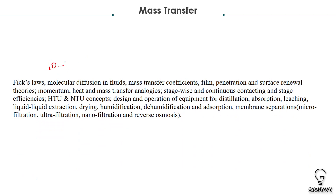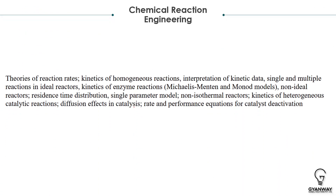Mass Transfer is asked for 8 to 12 marks and is important both for interviews and the GATE examination. Topics include Fick's Law diffusion, mass transfer coefficients, film, penetration, and surface renewal theories, momentum-heat-mass transfer analogies, HTU, NTU, and unit operations such as distillation, absorption, leaching, drying, extraction, liquid-liquid extraction, humidification, dehumidification, adsorption, and membrane separations. Membrane separations — including microfiltration, ultrafiltration, and nanofiltration — were added from GATE 2021. Mostly numerical questions are asked.